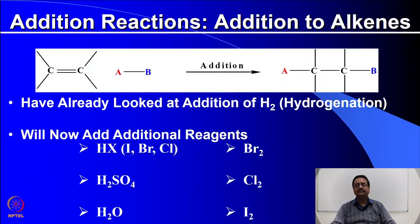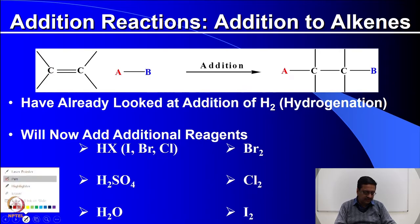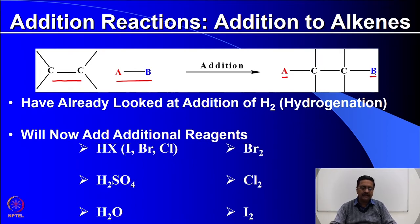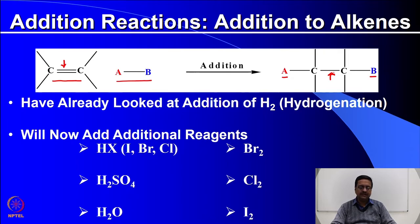To start with, when we think of addition reactions, that means we are talking about saturation of an unsaturated carbon compound. For example, if we have a C-C double bond as shown here and we want to add a substrate AB — which may be unsymmetrical or symmetrical — then A and B get added and the double bond is converted to a single bond. This is very similar to the addition of hydrogen to a C-C double bond, which you may have learnt in your 10+2 studies.